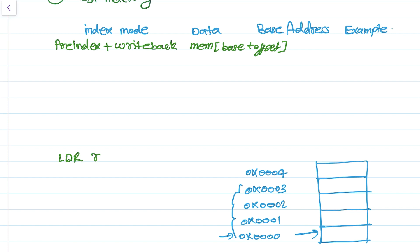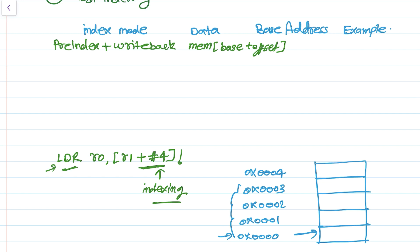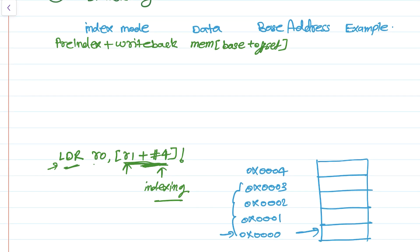Let's say we have the instruction LDR R0 from address R1 — we have seen this kind of LDR in a previous tutorial. But now let's say we have something like R1 plus #4. This is the new term we have added, and this is what I am referring to as indexing. The question is: will data be loaded from the memory address pointed by R1, or from the address pointed by R1 plus 4? All of this depends on the addressing mode.